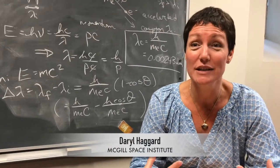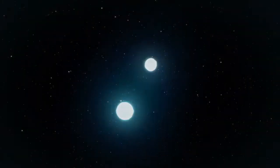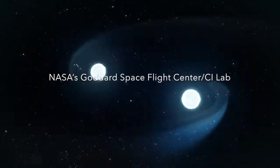The big picture discovery here is that LIGO has detected two neutron stars that have smashed together and sent out ripples through space-time.